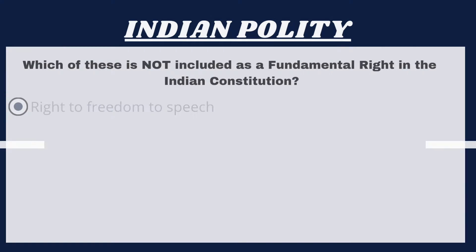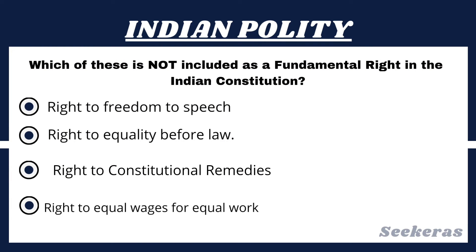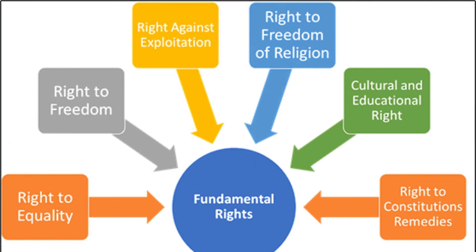Question number 7. Which of these is not included as a fundamental right in the Indian Constitution? Option 1, Right to freedom of speech; Option 2, Right to equality before law; Option 3, Right to constitutional remedies; or Option 4, Right to equal wages for equal work. The answer is Option 4, Right to equal wages for equal work. The Indian Constitution guarantees six fundamental rights: Right to equality, Right to freedom, Right against exploitation, Right to freedom of religion, Cultural and educational rights, and Right to constitutional remedies.